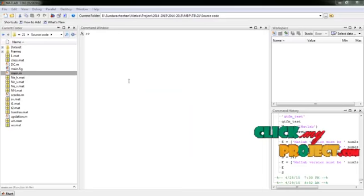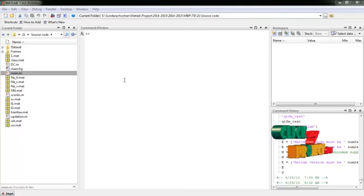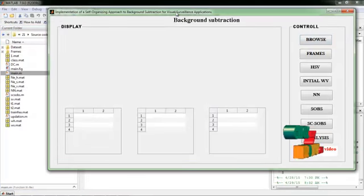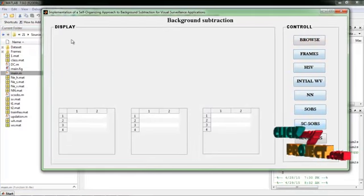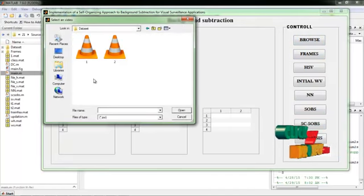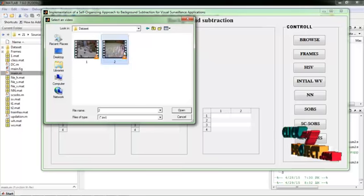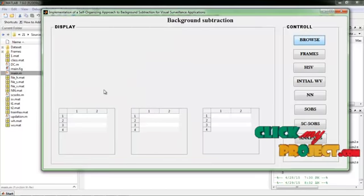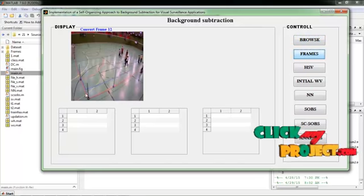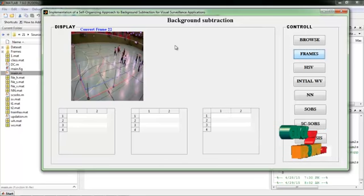Now we're going to demo our process. First open the MATLAB source code and right click the main.m and then run the file. And then the process guide will be open. First browse the input video from the dataset. Now the video will be read and then converted to frames. Here the frame conversion and filtering process, and also the frame will be counted here.